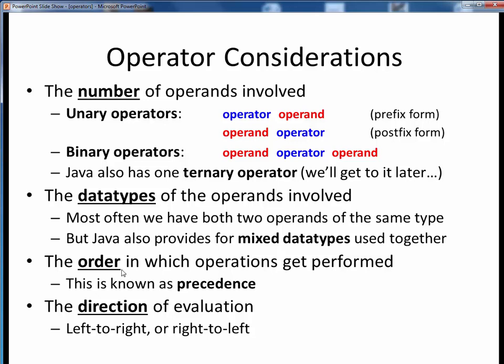Another consideration is the execution order in which operations get performed, also known as precedence. There is a table of relative operator precedence, which we'll get to a bit later on. And finally, one other consideration will sometimes be the direction in which operations are evaluated, either left to right or right to left. We'll also consider this in the context of precedence.